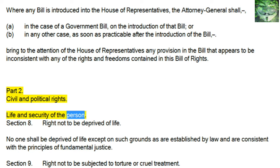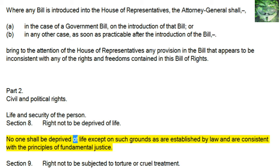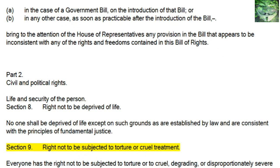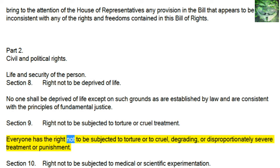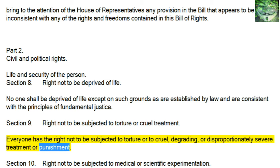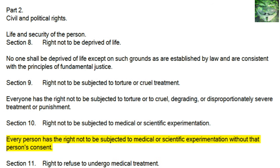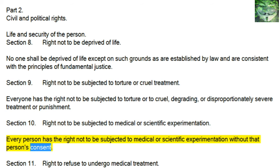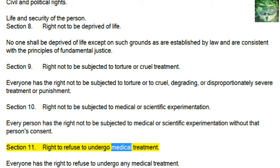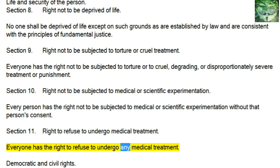Life and Security of the Person. Section 8, Right Not to be Deprived of Life: no one shall be deprived of life except on such grounds as are established by law and are consistent with the principles of fundamental justice. Section 9, Right Not to be Subjected to Torture or Cruel Treatment: everyone has the right not to be subjected to torture or to cruel, degrading, or disproportionately severe treatment or punishment. Section 10, Right Not to be Subjected to Medical or Scientific Experimentation: every person has the right not to be subjected to medical or scientific experimentation without that person's consent. Section 11, Right to Refuse to Undergo Medical Treatment: everyone has the right to refuse to undergo any medical treatment.